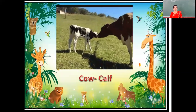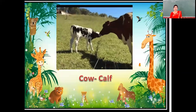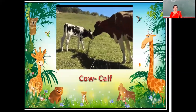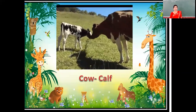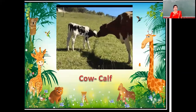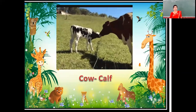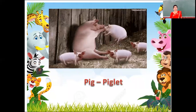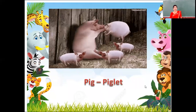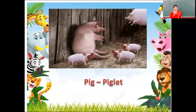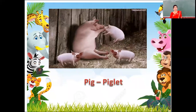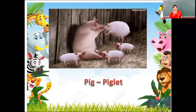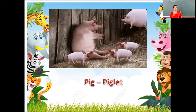Next feature is of cow and calf. Young ones of cow is calf. C-O-W, cow. C-A-L-F, calf. Next feature is of pig and piglet. Young ones of pig is piglet. P-I-G, pig. P-I-G-L-E-T, piglet.